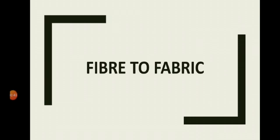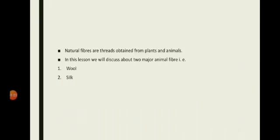Basically, we will read about two animal fibers in this chapter: wool and silk — how wool is obtained and processed, and how silk is obtained and processed. Today I will discuss the processing of wool. First, you have to know what a fiber is. Natural fibers are obtained from plants and animals. In class 6 you read about plant fibers like cotton, flax, and jute. In this class you will read about the two major animal fibers: wool and silk.